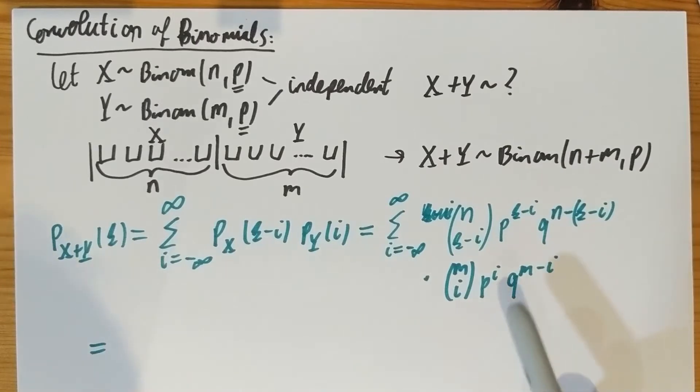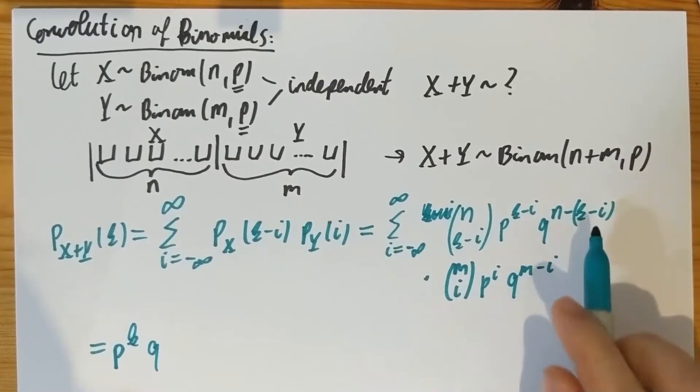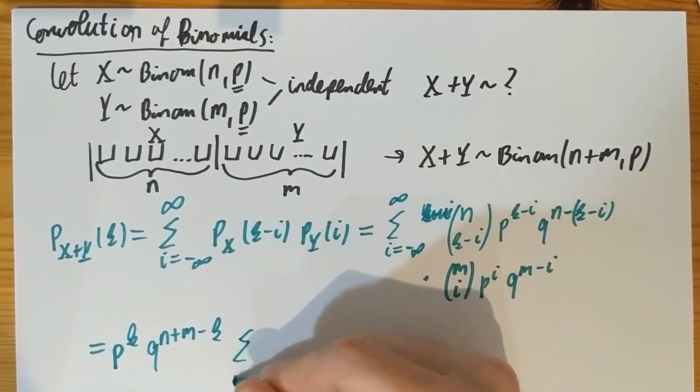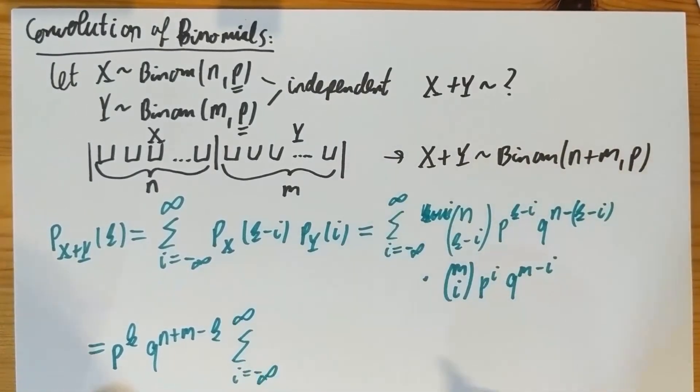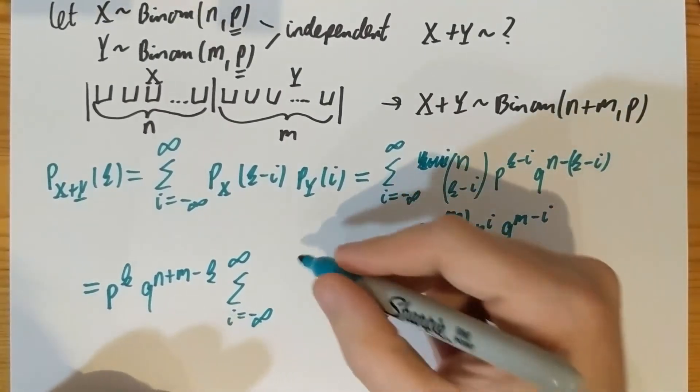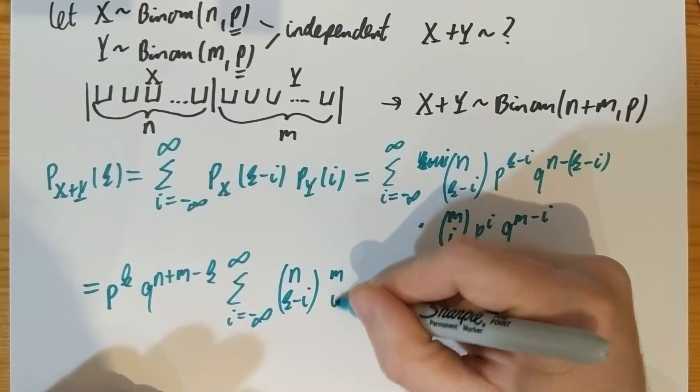The second observation I want to make is that the I's power here and the I's power there cancel. There is a positive I here and a negative I there on the Q. There is a positive I and a negative I on the P. Those cancel, which is good news. And the total power of P is K. The total power of Q is N plus M minus K. And then I'm left with an infinite sum that's really a finite sum, but rather than writing out the complicated boundary, I'm just going to keep it as an infinite sum of N choose K minus I and M choose I.